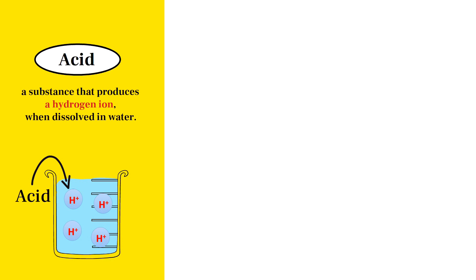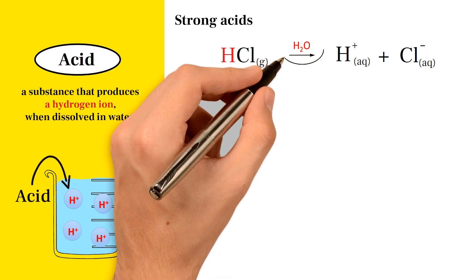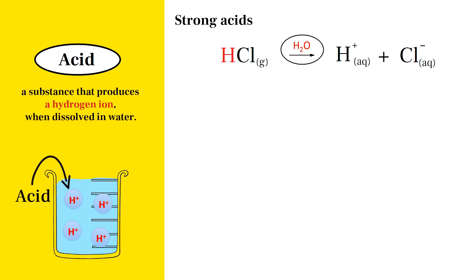Let us consider together the ionization equations of some acids according to the definition of Arrhenius. Strong acids — for example, hydrochloric acid contains hydrogen atoms in its composition. When dissolved in water, it will completely ionize to positive hydrogen ions and negative chloride ions because it's a strong acid. We put the water formula above the arrow, because water does not interact but is only a medium in which the acid or base dissolves according to the concept of Arrhenius.